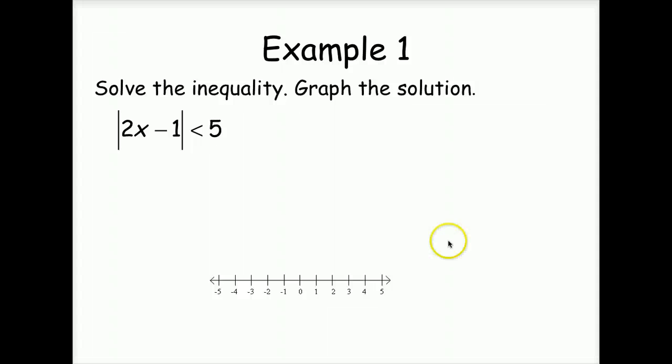So let's look at example one. Already, the absolute value has been isolated. So we're going to set it up for a positive five and a negative five. Notice we flip the sign. So it's less than five, but it's greater than negative five.